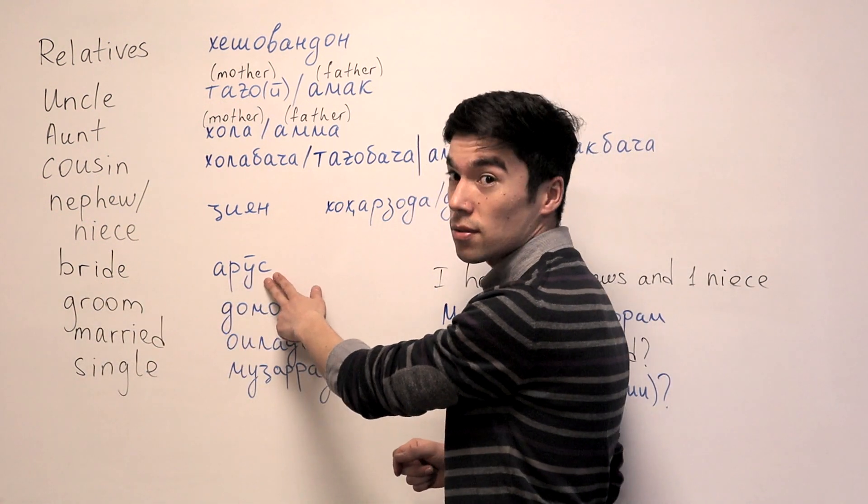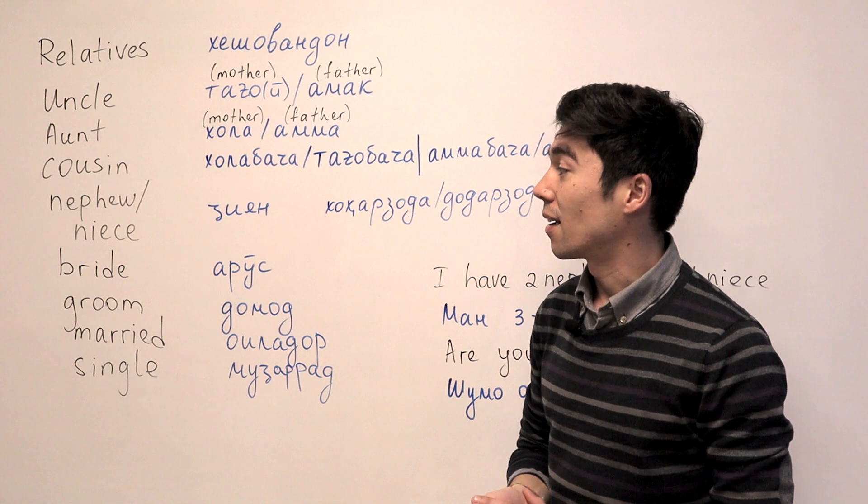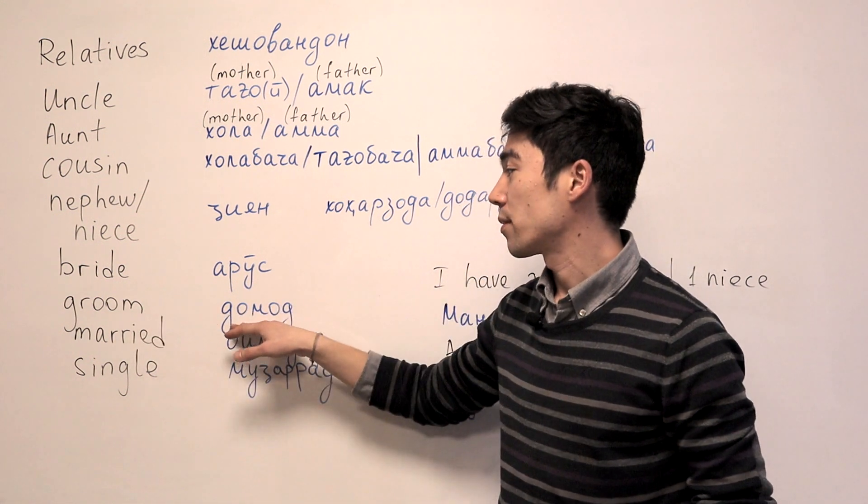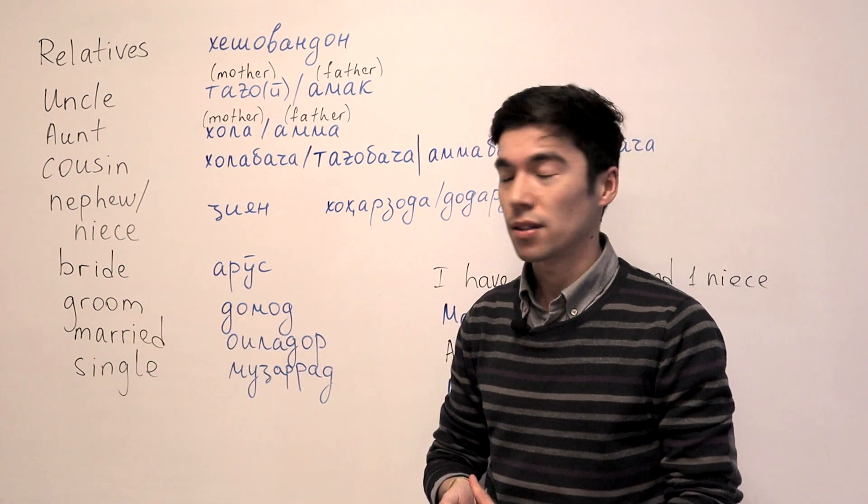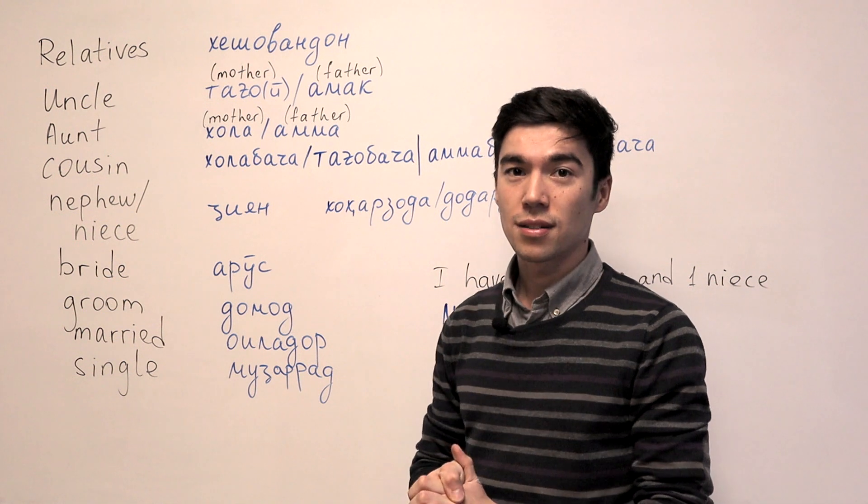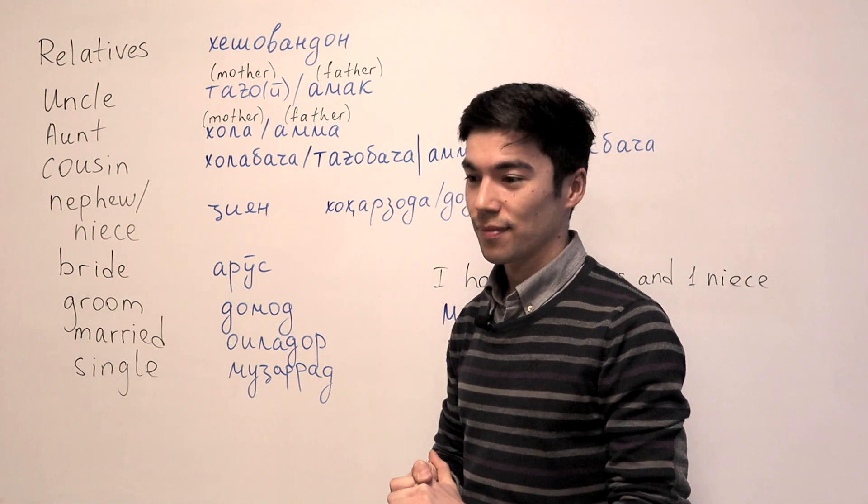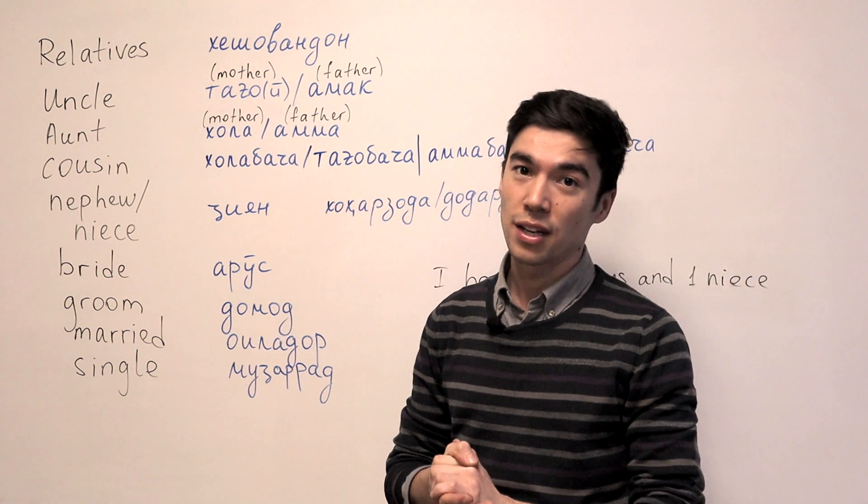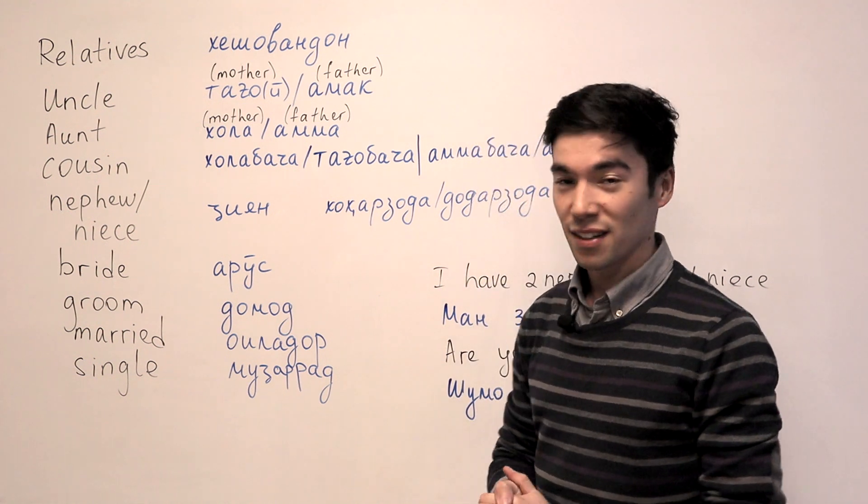And next one is bride. And we say Aros. And groom will be Domot. That's a big deal in Tajikistan. Wedding is like the biggest event in their lives usually. So now let's move on.